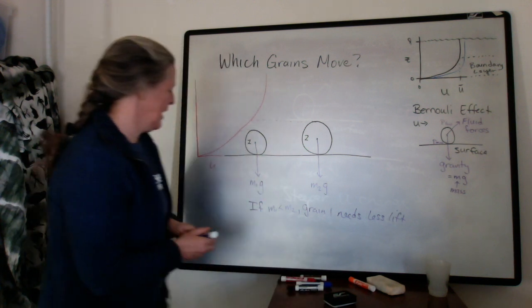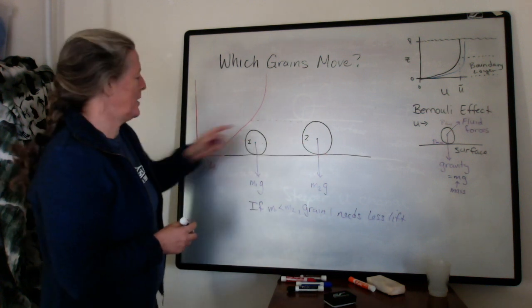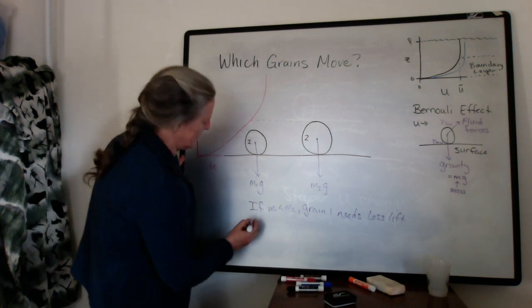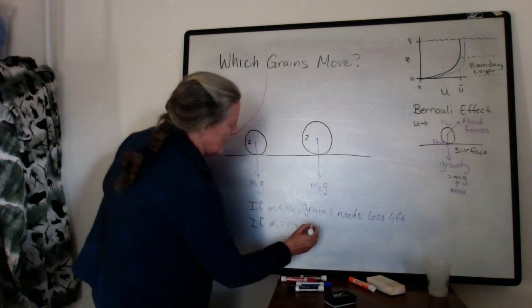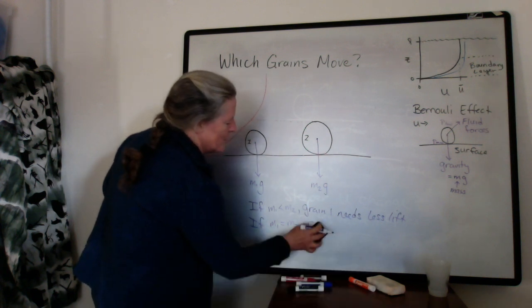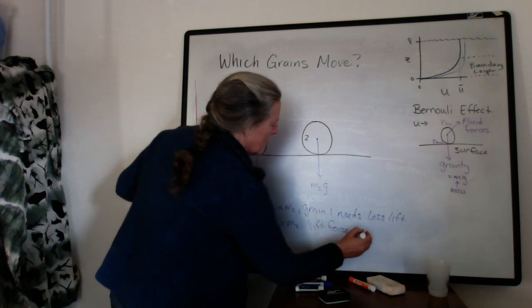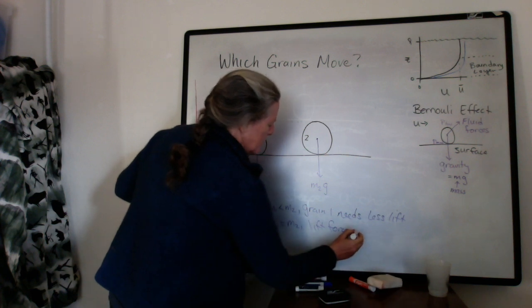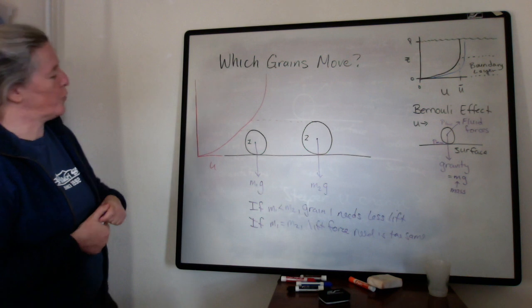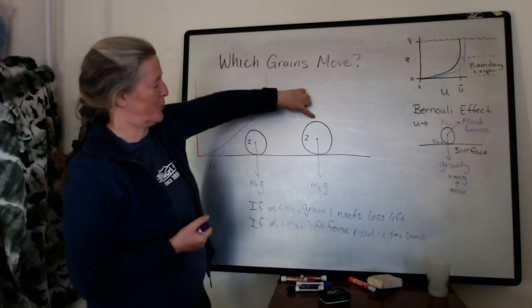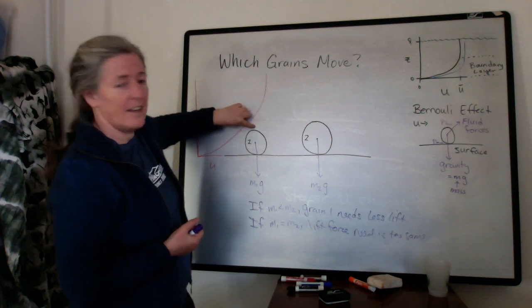It could be that grain 1 is actually maybe a denser mineral than grain 2. So like maybe it's a pyroxene and grain 2 is quartz, the density of pyroxene is greater. So we can say that if m1 is about equal to m2, the lift force would be the same to move them. But in this particular case, the lift force will be greater on the larger grain because the flow speed is faster at the top of the grain, which will create a lower flow pressure at the top than this particular grain.